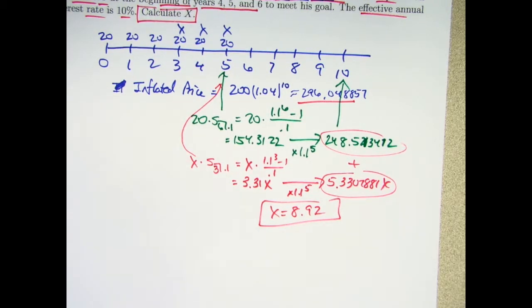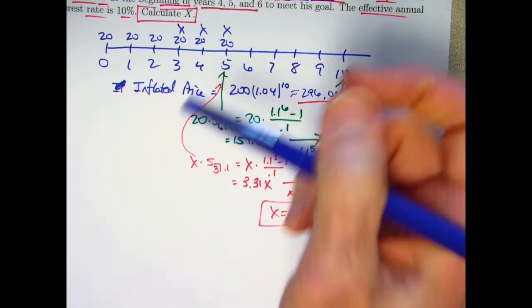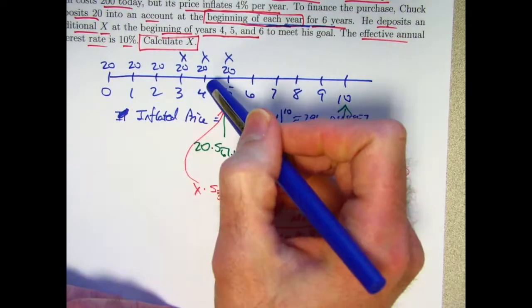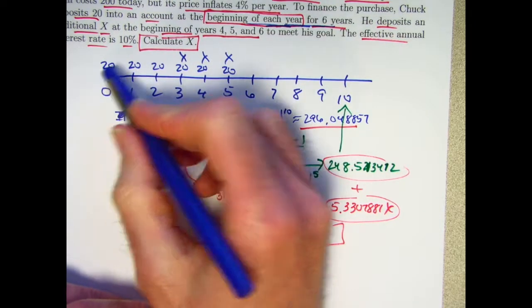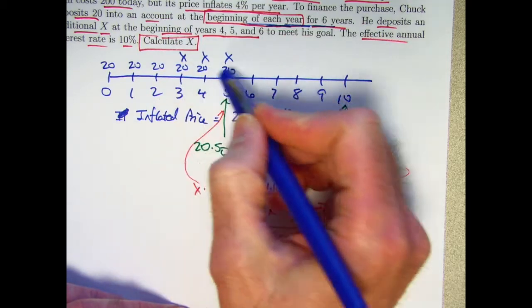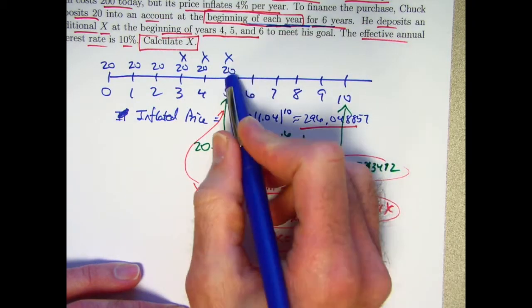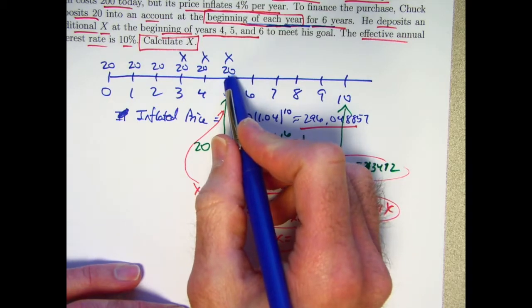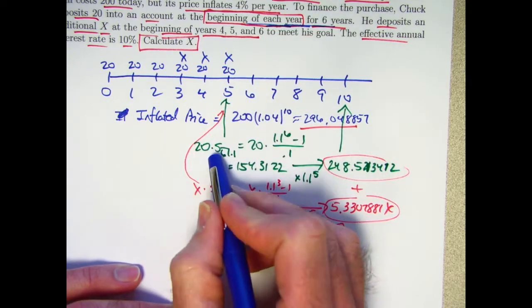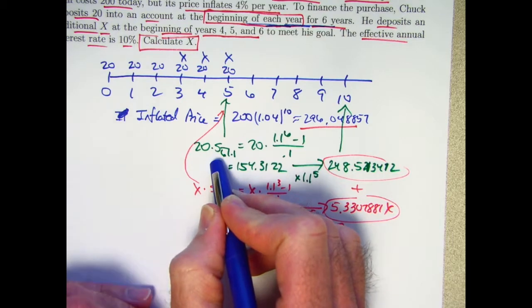That is the answer to the problem. Now, what about thinking of this in terms of an annuity due? How is it different? Well, I've said that for, let's focus on the 20s here. For a series of six payments of 20 equally spaced,